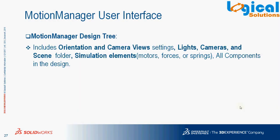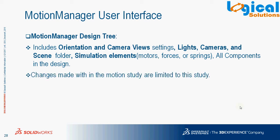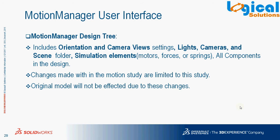Motion Manager Design Tree: the Motion Manager Design Tree includes orientation and camera view settings, lights, cameras, scene folders, and simulation elements we add to motion studies — like motors, forces, springs — and all the components in the model design tree. The changes made to the design from the Motion Manager Design Tree can only be limited to the motion study we are doing, which helps in modifying our motion as required.